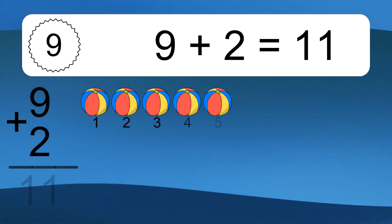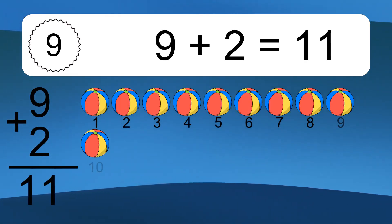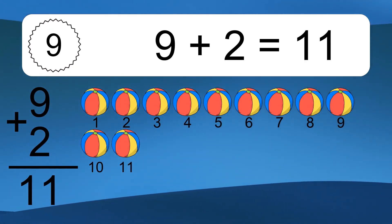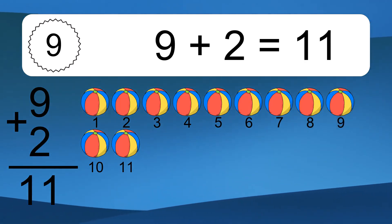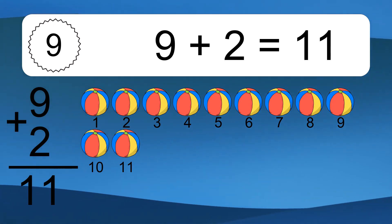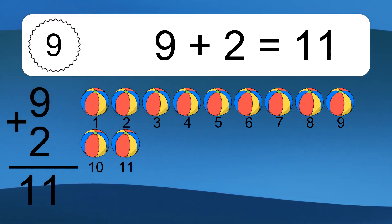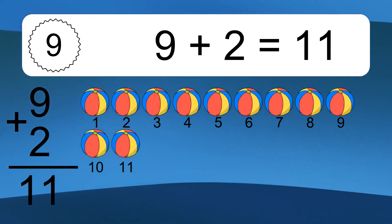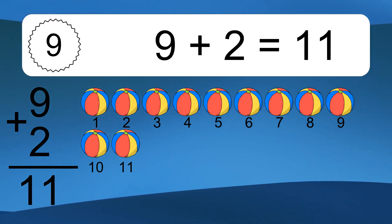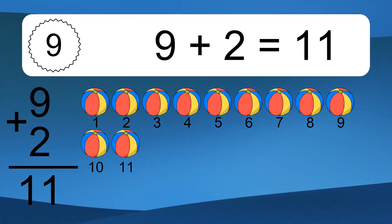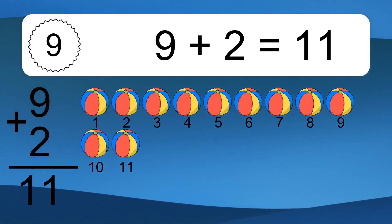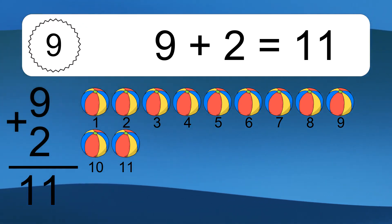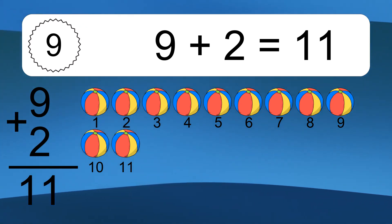1 plus 10 equals 11. Let's count it. 1, 2, 3, 4, 5, 6, 7, 8, 9, 10, 11.